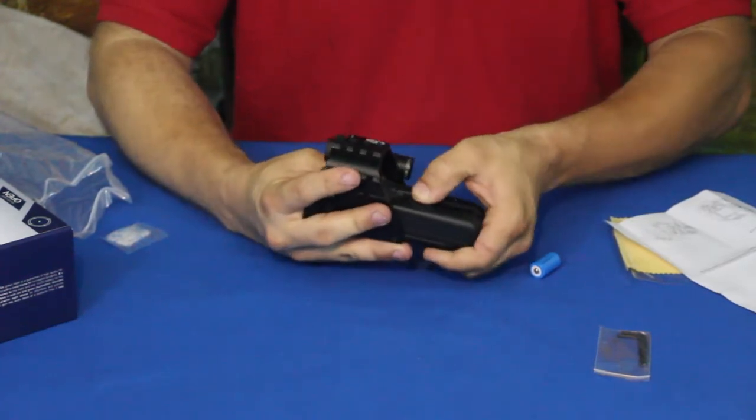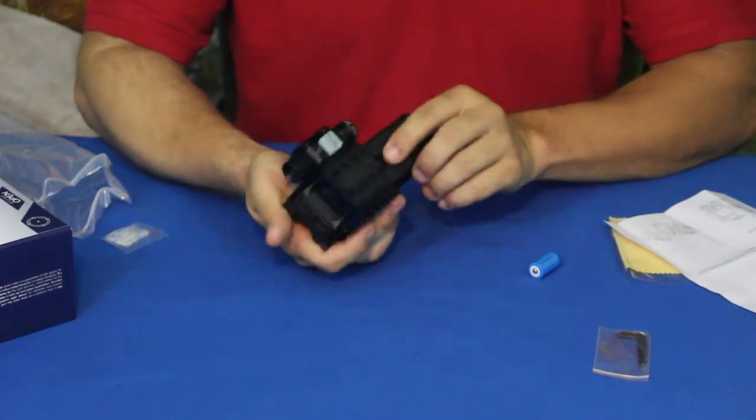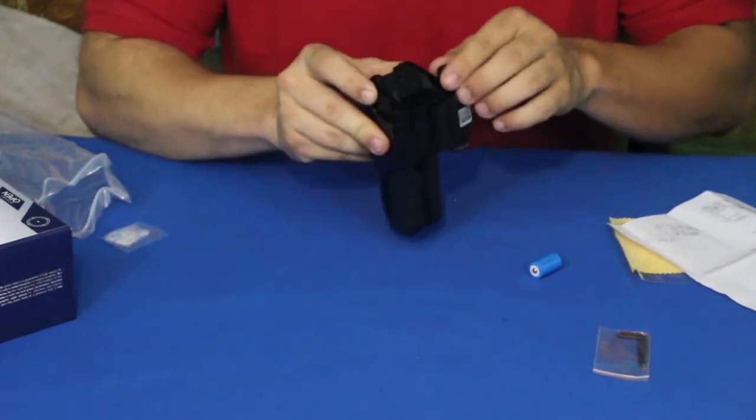Then we just snap it down - it presses down into place. This lever ratchets it back down and locks it in, so we've got a nice connection there. Let's put the battery in.